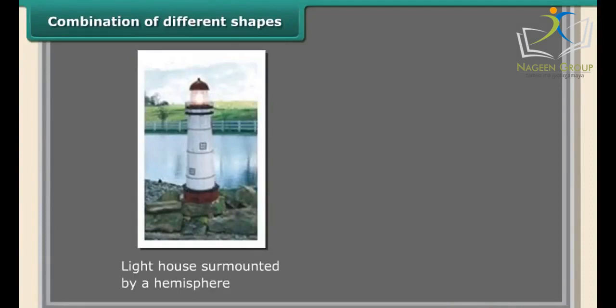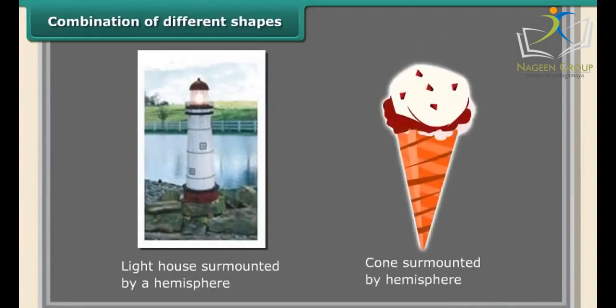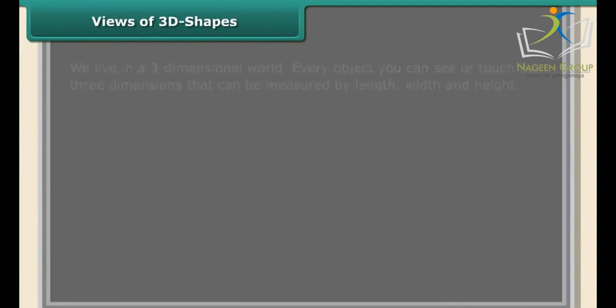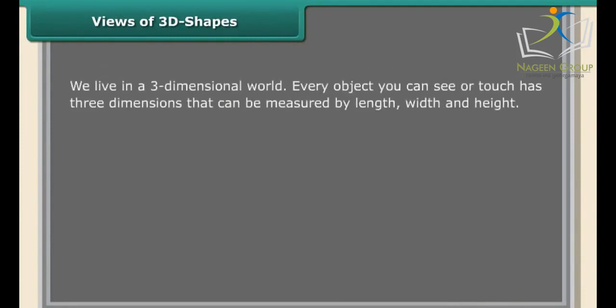Combinations of different shapes include a lighthouse surmounted by a hemisphere, and cones surmounted by a hemisphere. These shapes are combinations of different forms that we use in our day-to-day life.